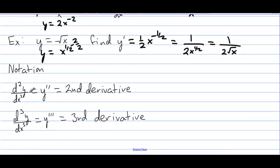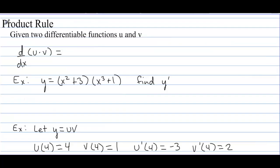Here we have some notation: d²y over dx² is the second derivative; d³y over dx³ is the third derivative, and so on.